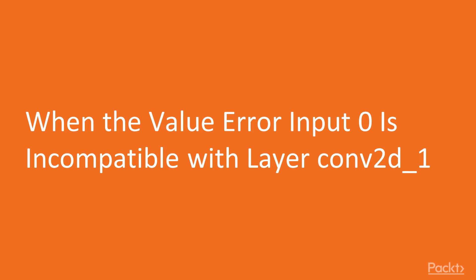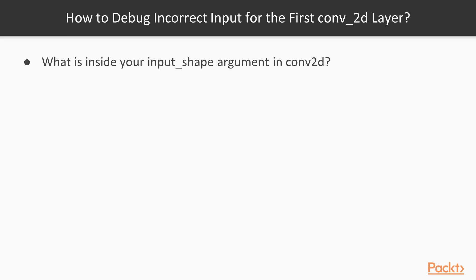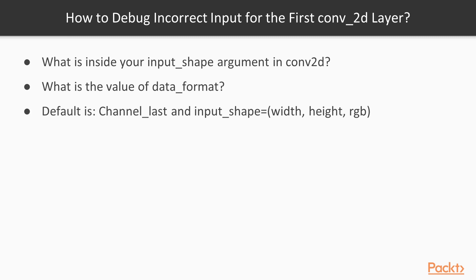When you have a model where the first layer is a two-dimensional convolutional layer and you've got this input, you have to first ask yourself: what's inside the input_shape argument in this layer? This argument defines what dimensionality your data must have for this layer to accept your input. You also have to check what's inside the data_format argument. The default value for data_format is channel last.